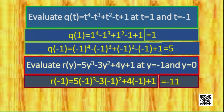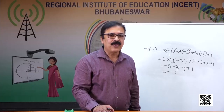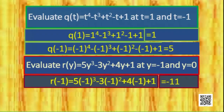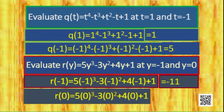For y = 0, R(0): all the y terms become 0 except the constant term 1. So the value will be 1.